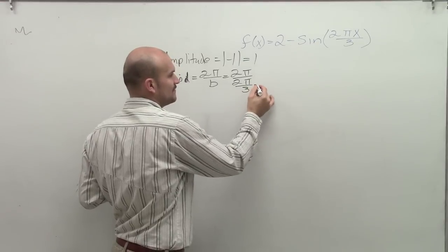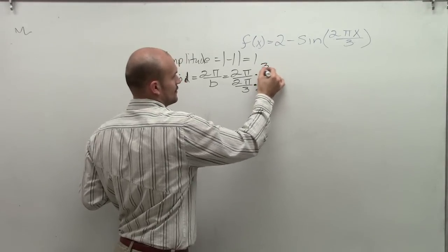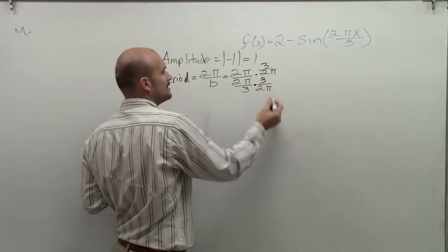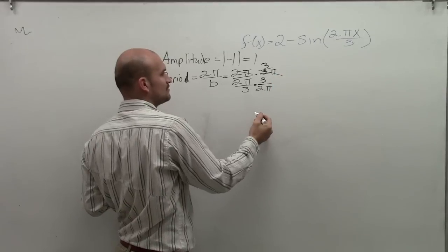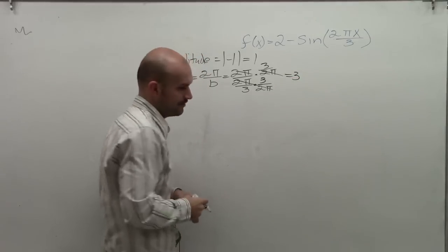So to get rid of this fraction as my denominator, I multiply by the reciprocal. And therefore, that's going to multiply to 1. That multiplies the 1. And I'm just left with a period of 3.